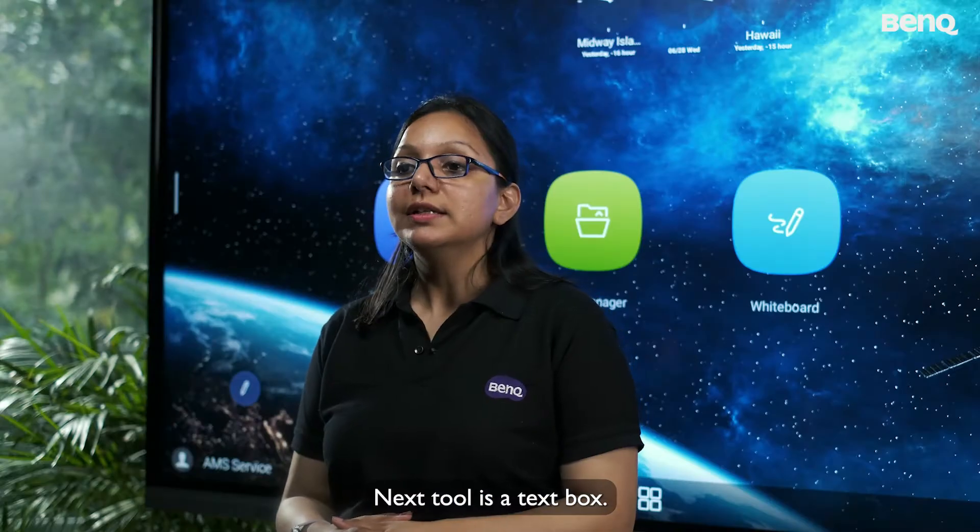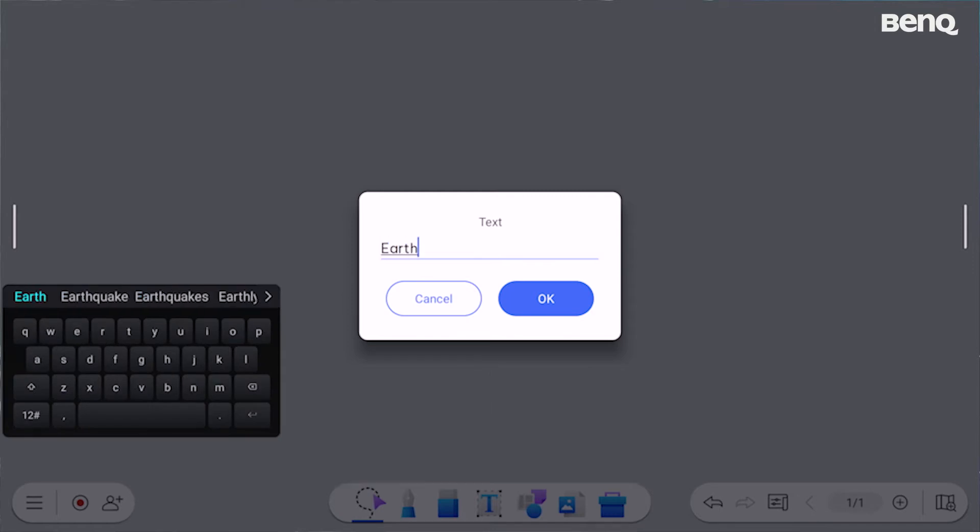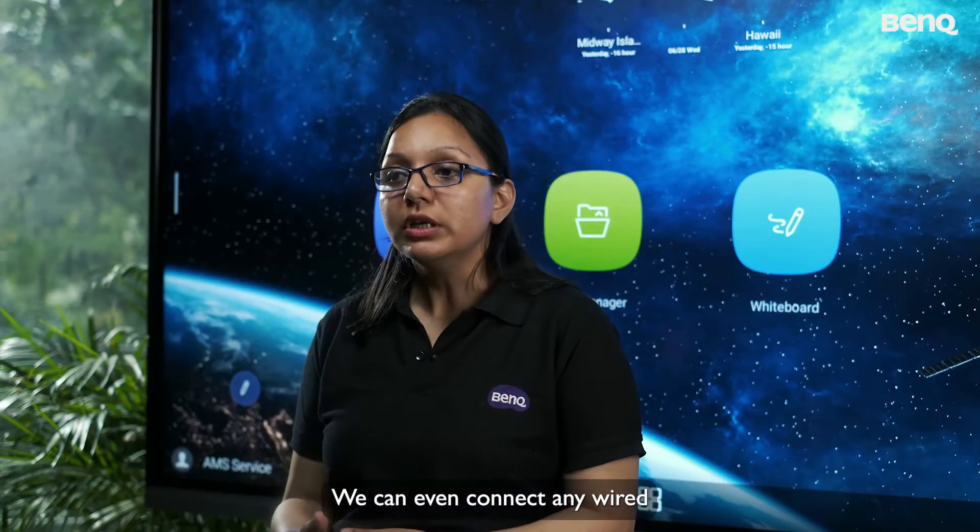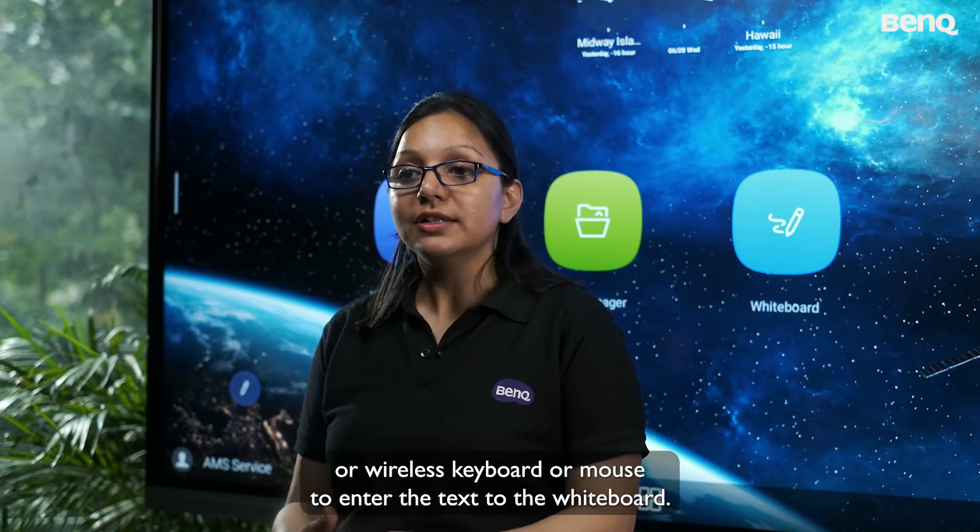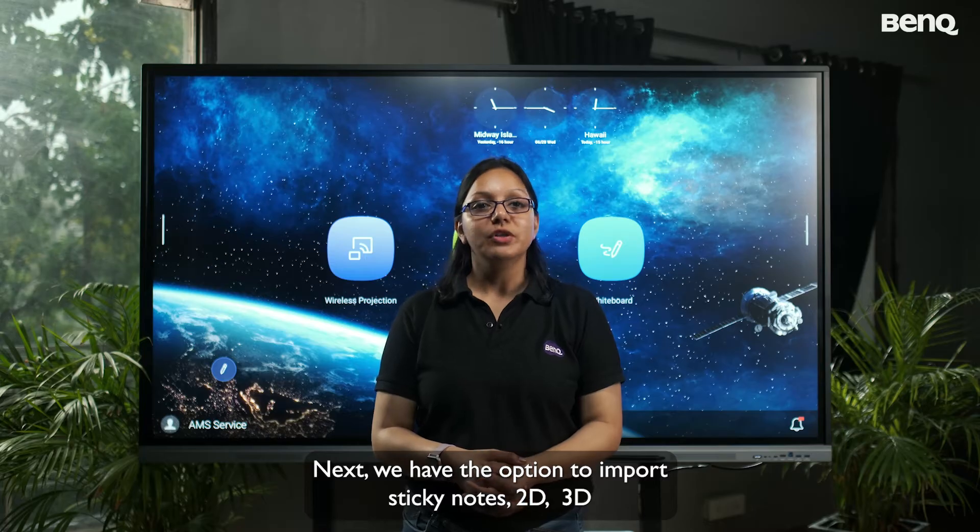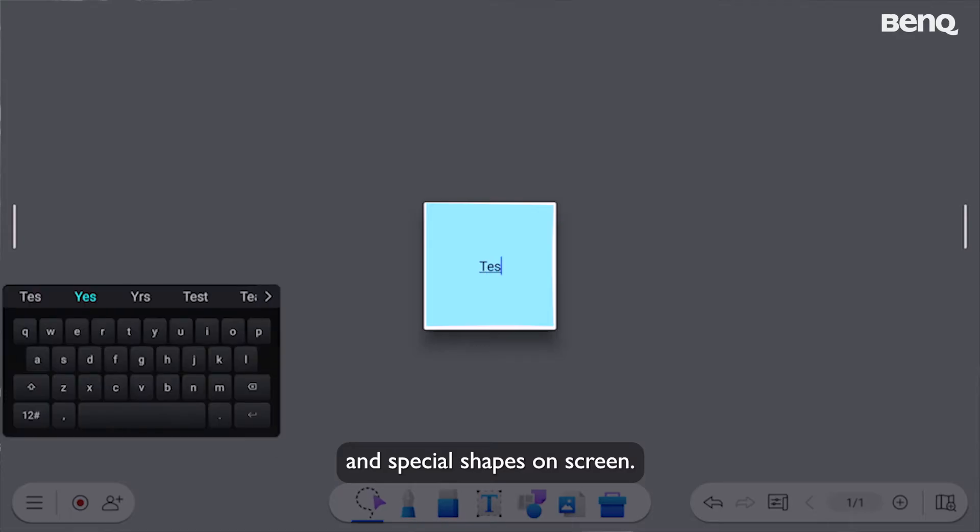Next tool is a text box. We can input text via virtual keyboard. We can even connect any wired or wireless keyboard or mouse to enter the text to the whiteboard. Next, we have the option to import sticky notes, 2D, 3D, and special shapes on screen.